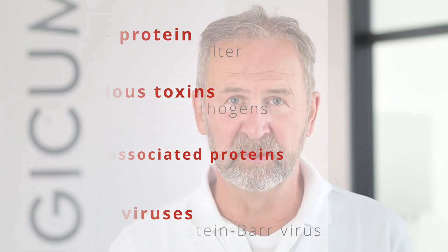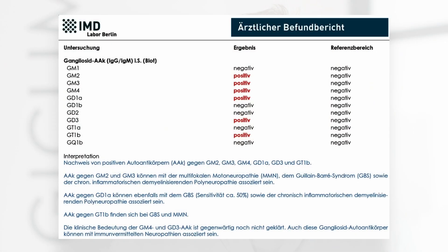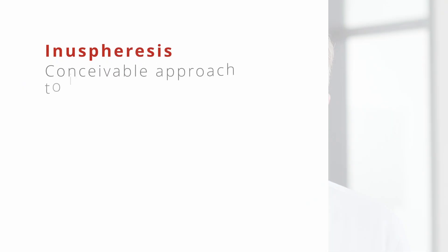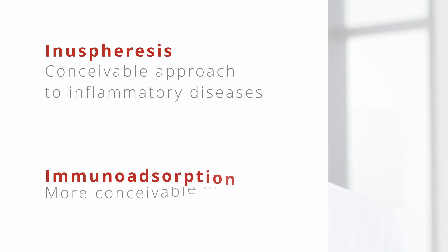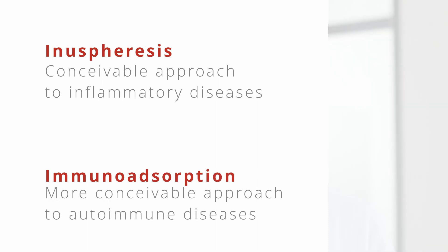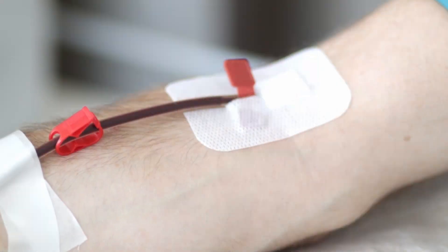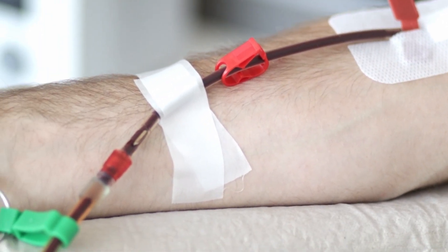Immune absorption, on the other hand, is highly specific and filters out the autoimmune antibodies in a more targeted manner. For diseases where the focus is on inflammation, we prefer inosphoresis. In diseases where autoimmunity is paramount, we prefer immune absorption. In the run-up to inosphoresis or immune absorption, laboratory parameters should be used to determine whether an individual attempted therapy makes sense and is appropriate.